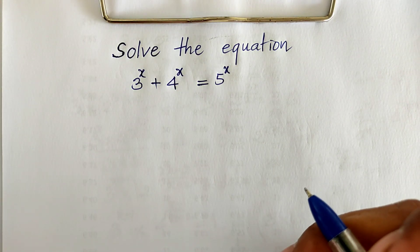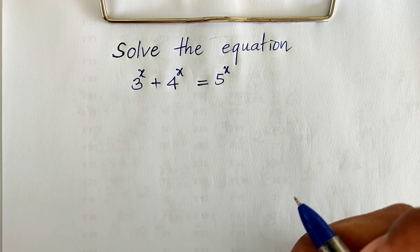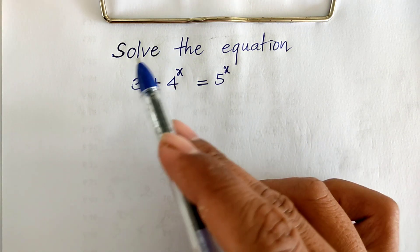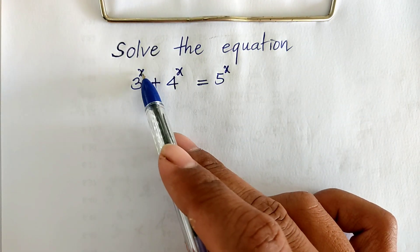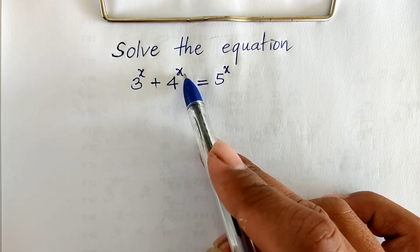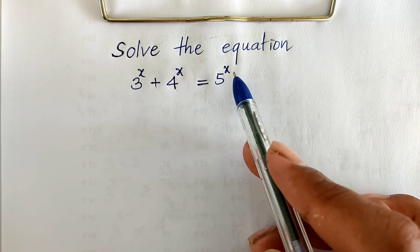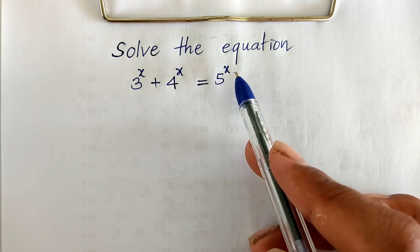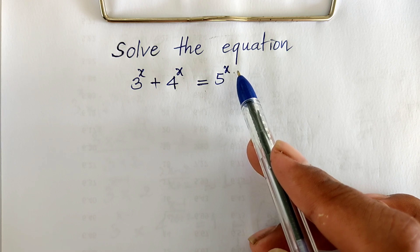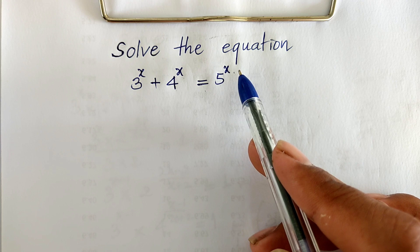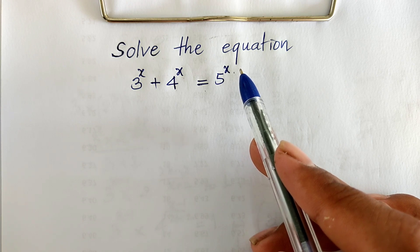Hello everyone, welcome to my YouTube channel. Today I have one exercise on paper. The equation is 3 power h plus 4 power h equals 5 power h. If you know how to show this, please try it first, then come back to watch my video from beginning to end to verify your solution. Please don't forget to subscribe to my channel for more exciting videos.